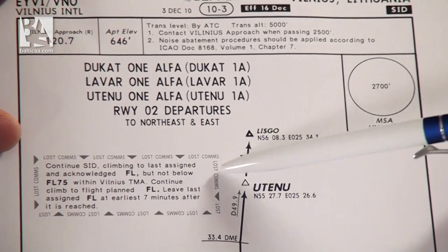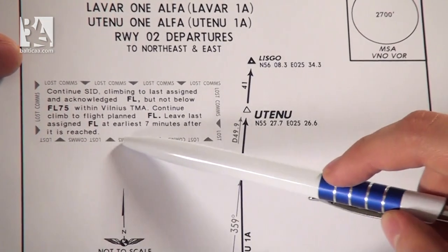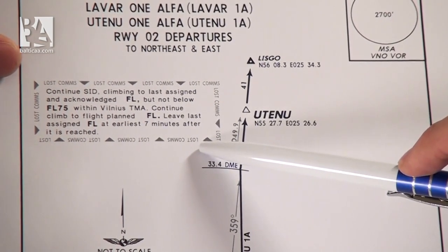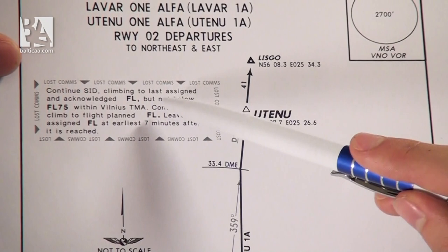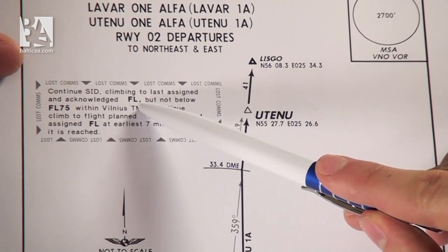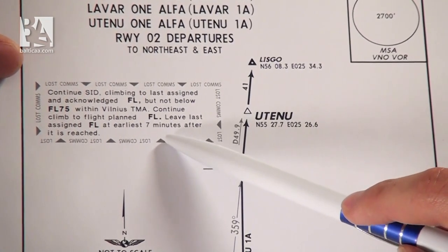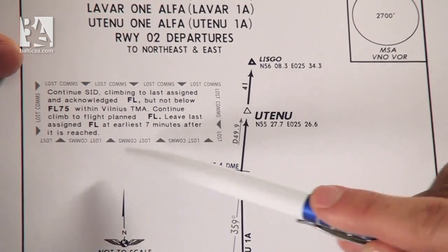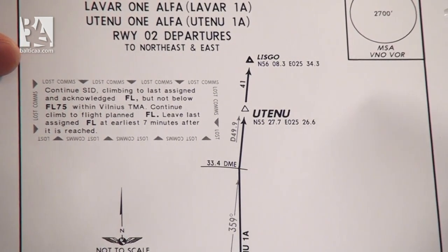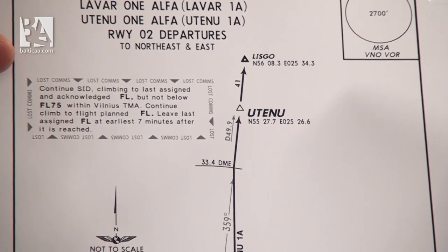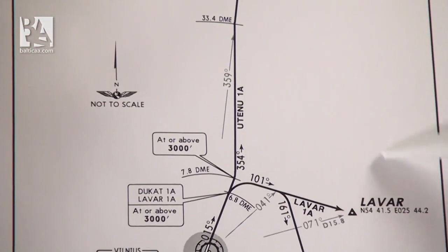Below the list we see the loss of communications procedure. This basically says we follow our standard instrument departure but adjust our altitude: we continue to our last assigned altitude or flight level, continue climbing to the flight planned flight level, and then leave the last assigned flight level at the earliest 7 minutes after it is reached. This is so that air traffic control understands we have lost communications. Below all of that we have the general map for the standard instrument departures, which is not to scale.